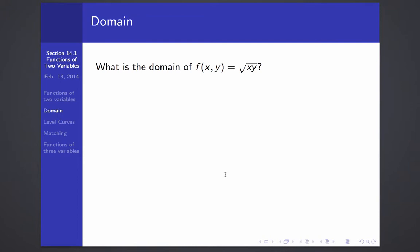Just like with an ordinary function of one dimension, for the domain, we're just looking for the values of the input variables x and y that give a real number as output. Since we can't take the square root of a negative number, we need x times y to be greater than or equal to zero.